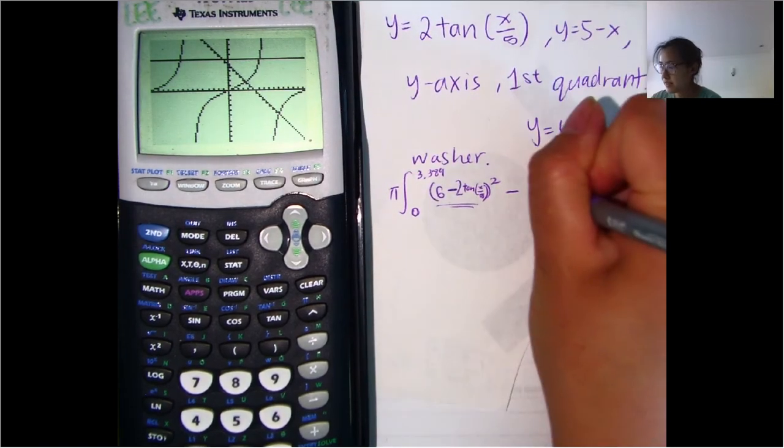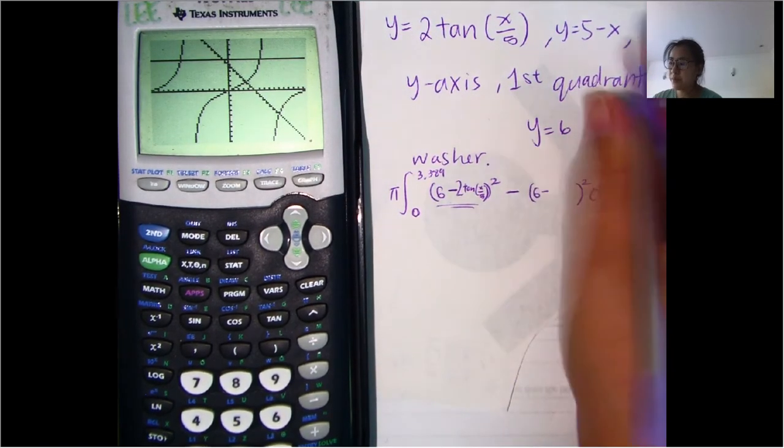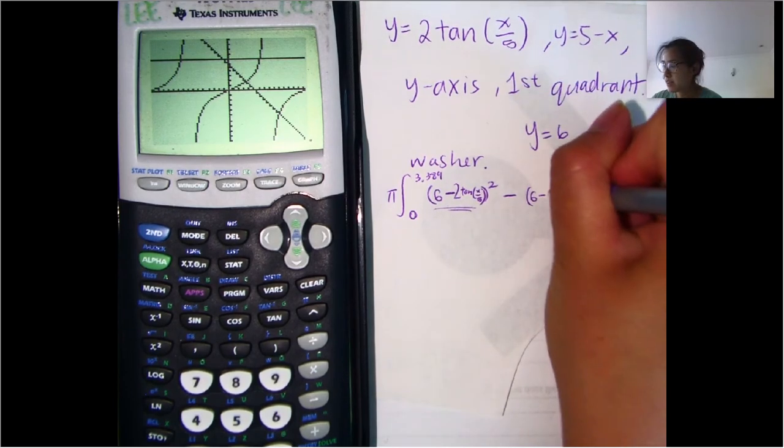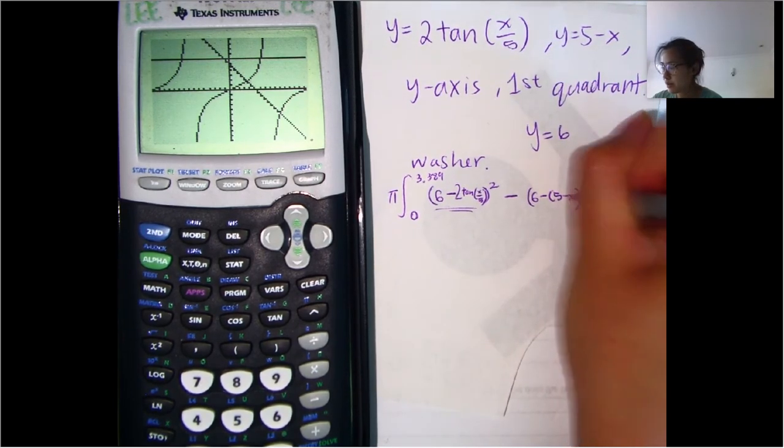And so that would be 6 minus, and then we'll put this in parentheses because there's two terms there. So 6 minus, and then 5 minus X in parentheses.